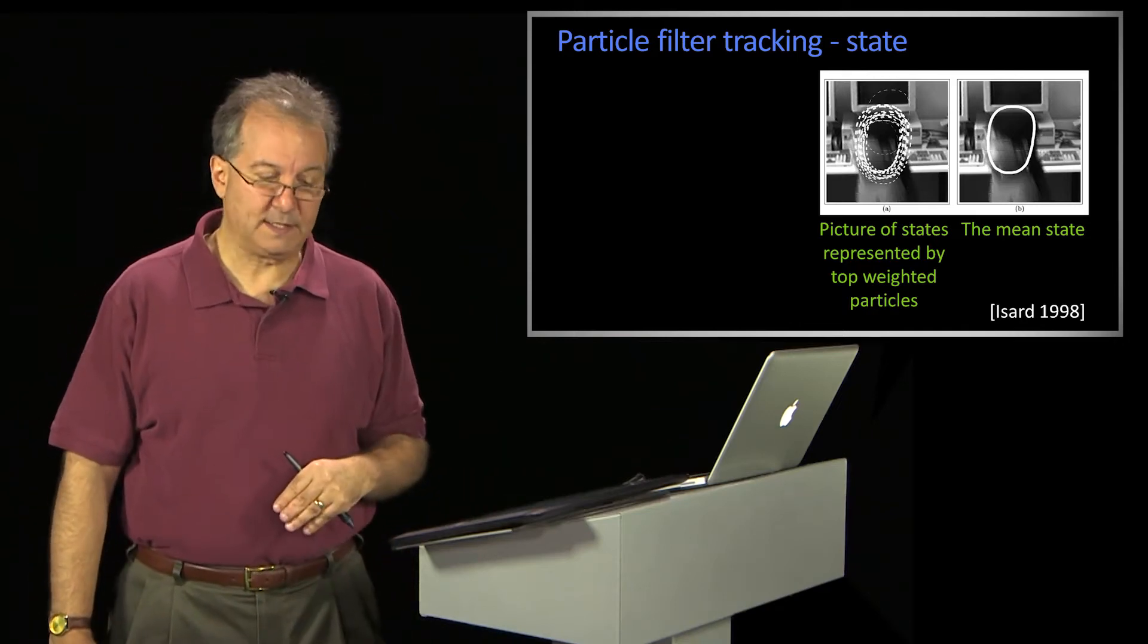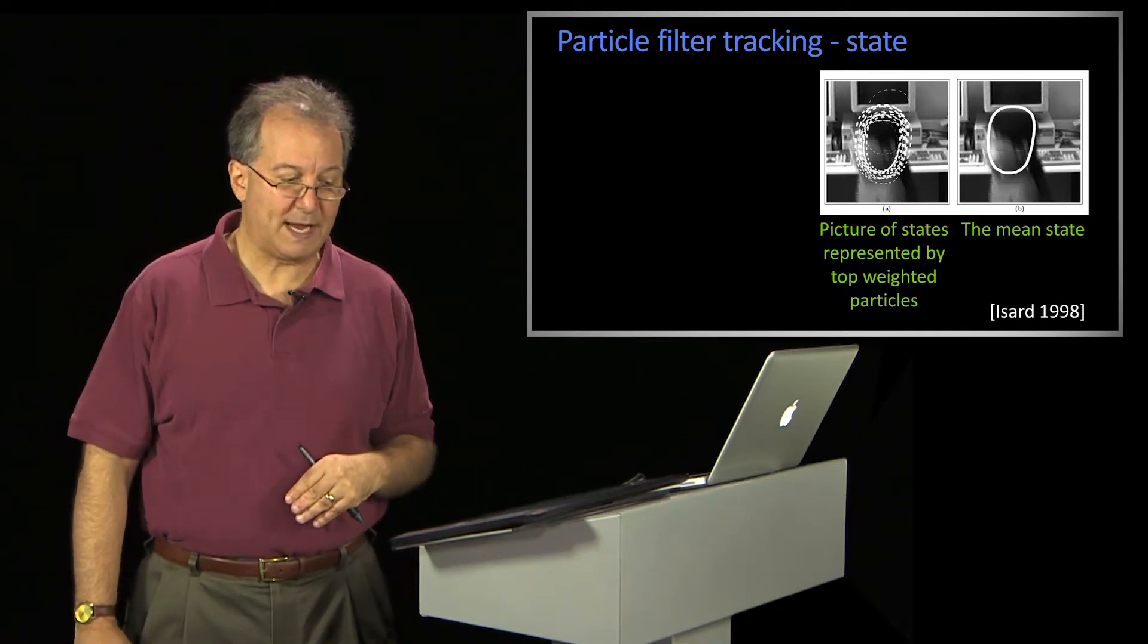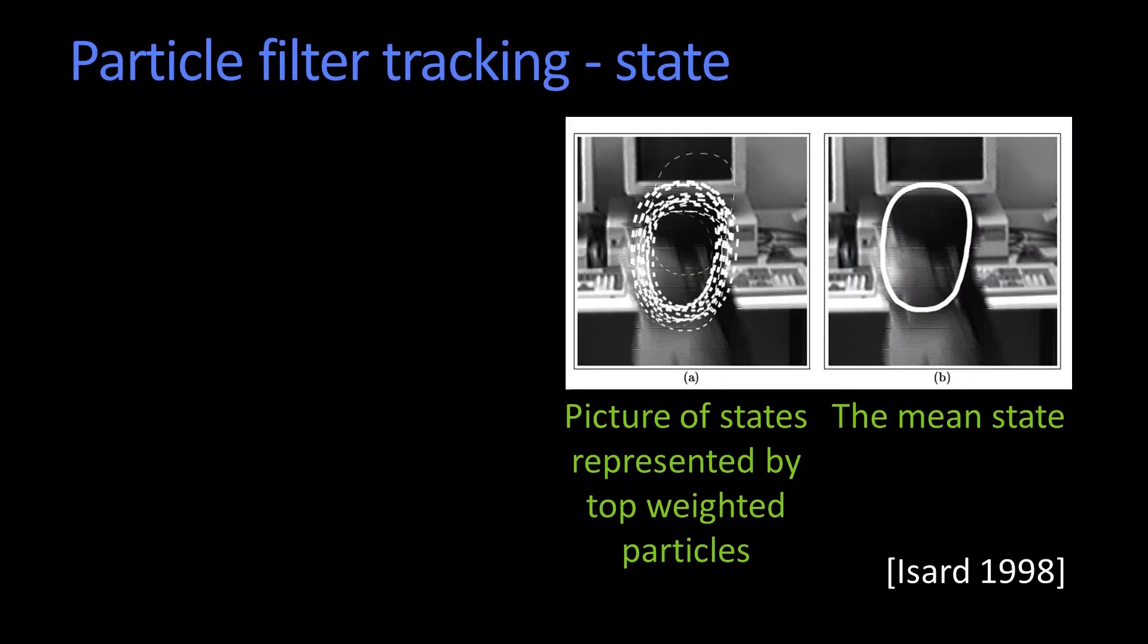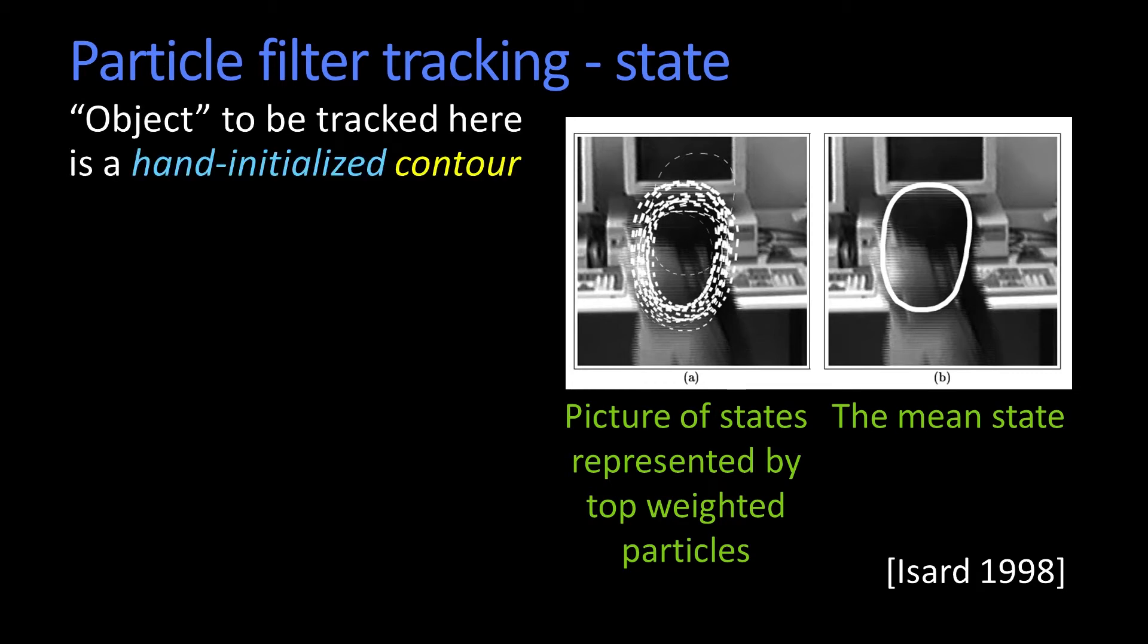We showed this picture already, right? This is a picture of the tracking of Andrew Blake's daughter. And the first question is, what is this state? And the state, or the object that was to be tracked, was a hand initialized contour of the head.